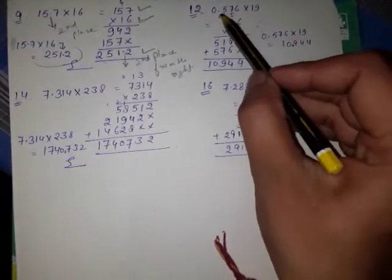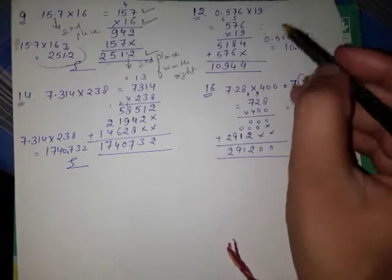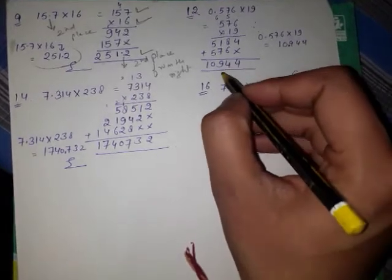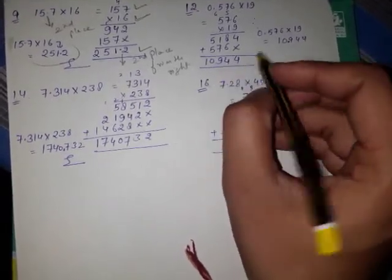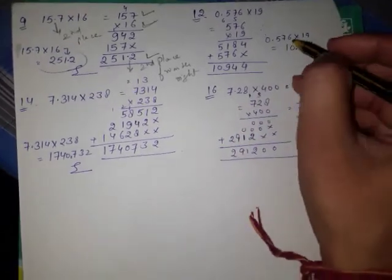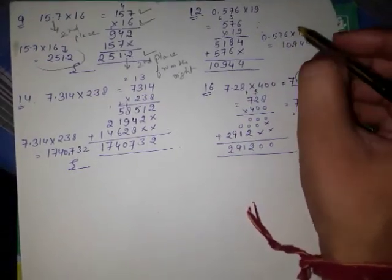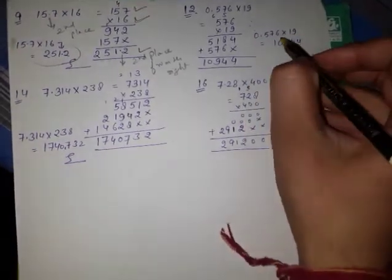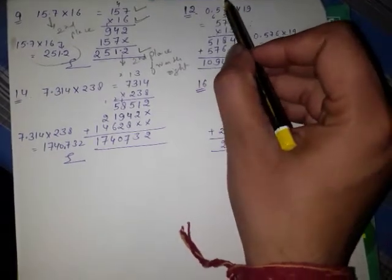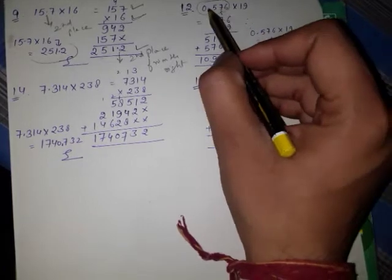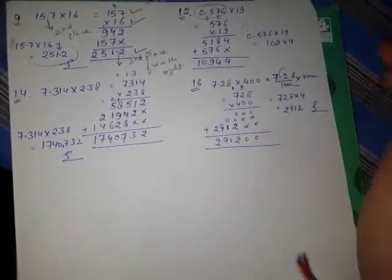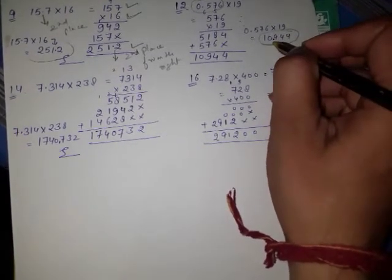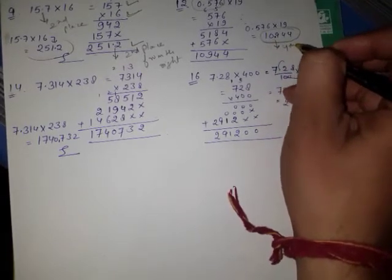Question number 12: 0.576 multiplied by 19। तो 576 को पहले 19 से multiply कीजिए — आएगा 10944। अब decimal point place करना है। 0.576 में decimal point 4th place पर आ रहा है from the right। तो 10944 में भी decimal point 4th place from the right आ जाएगा।